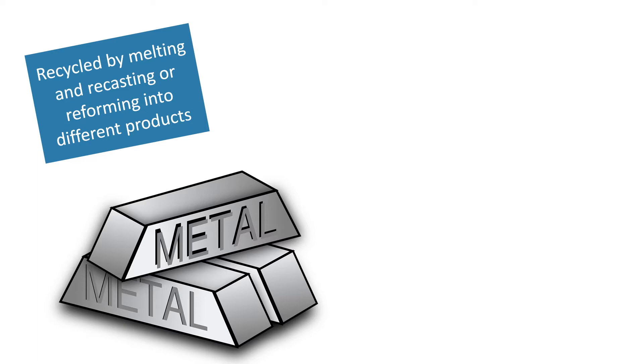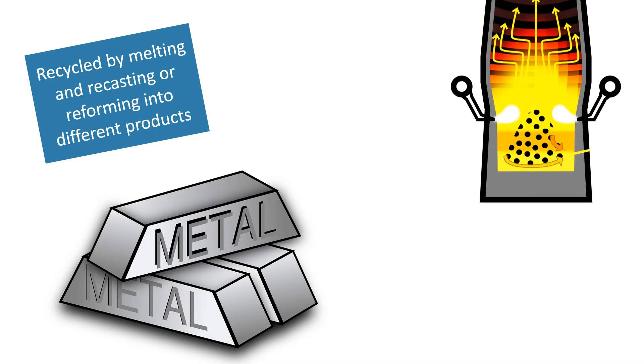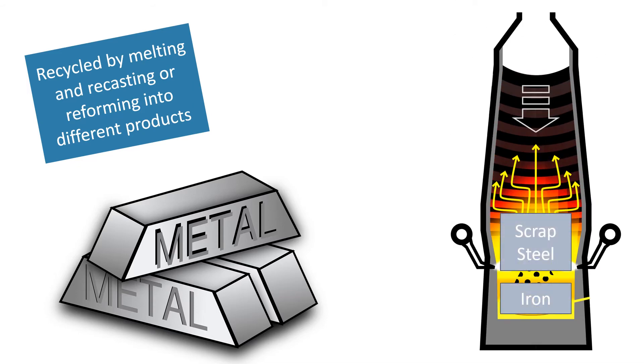The amount of separation required for recycling depends on the material and the properties required of the final product. For example, some scrap steel can be added to iron from a blast furnace to reduce the amount of iron that needs to be extracted from iron ore.